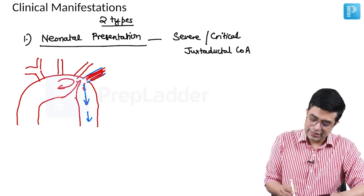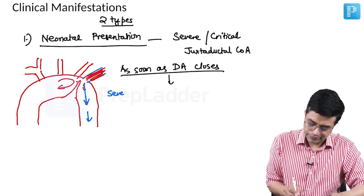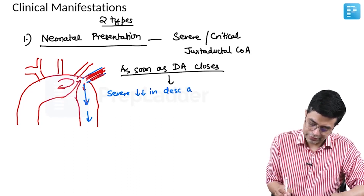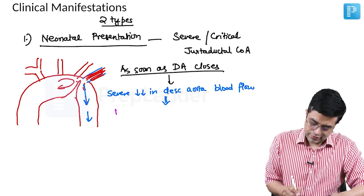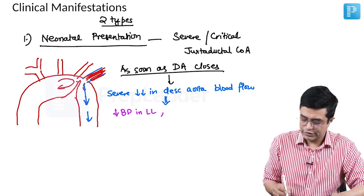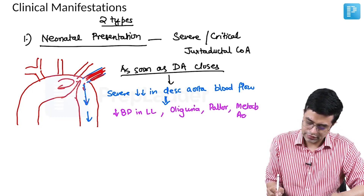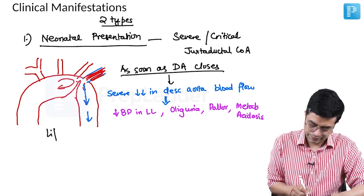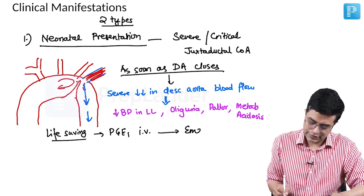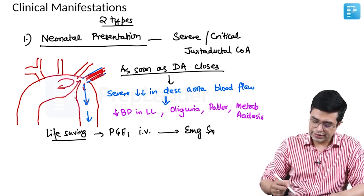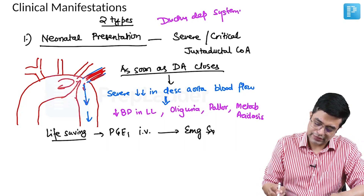As soon as the ductus arteriosus closes, these children have severe reduction in descending aortic blood flow, manifesting as a fall in BP in the lower limbs, oliguria, pallor, and metabolic acidosis. These patients need to be started on prostaglandin E1 IV infusion followed by emergency surgery. Neonatal presentation of coarctation of aorta is a duct-dependent systemic circulatory lesion.